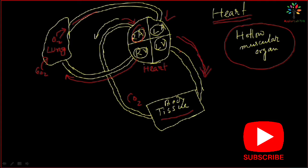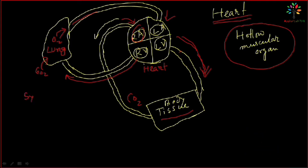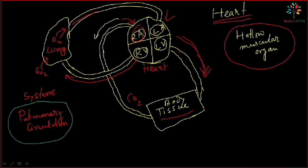For doing this, the heart has two different systems. One is known as pulmonary circulation. Pulmonary circulation means the circulation of blood between the heart and the lungs.